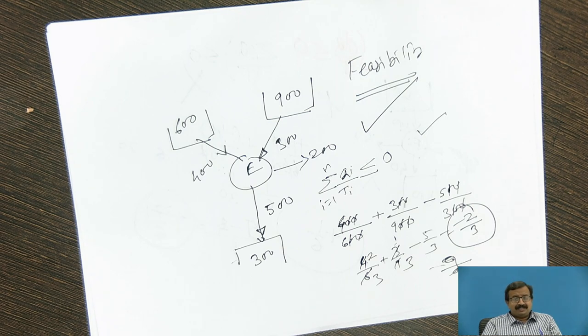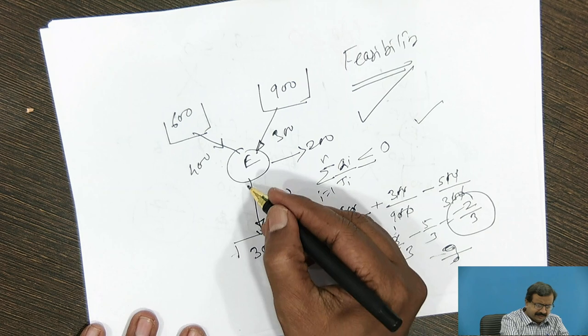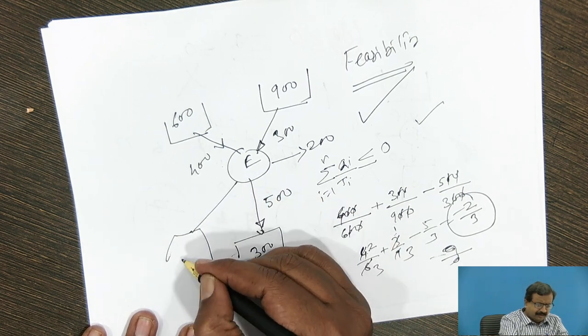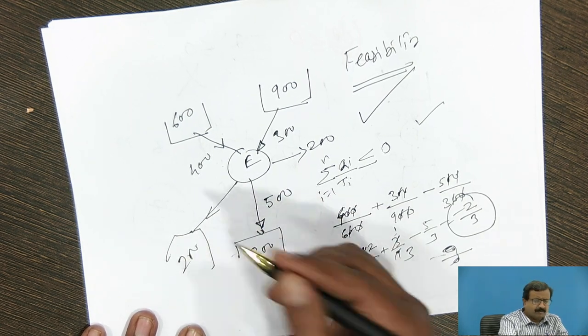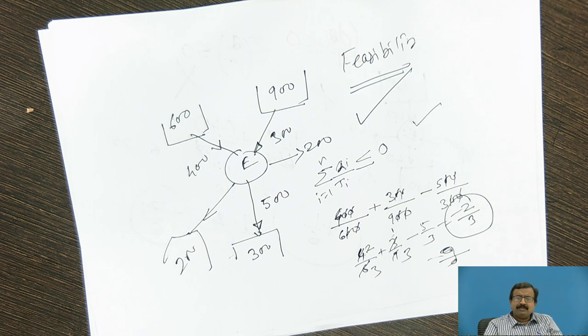Now see, this is a very interesting thing. Many times it happens in thermodynamics that we have many sources, we have many sinks. Not necessarily this one sink is here. There may be another sink which we are supplying at 200 Kelvin some amount of heat. And we have to check the feasibility of the engine. Now once you have a tool of Carnot efficiency and the Clausius inequality, we can do the analysis of your thermodynamic cycle very easily.